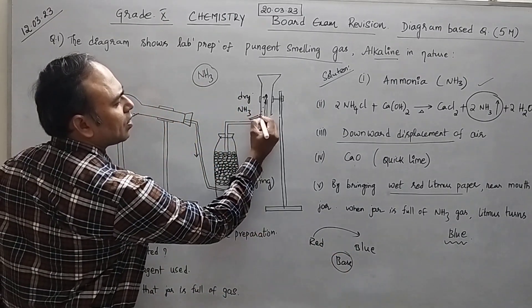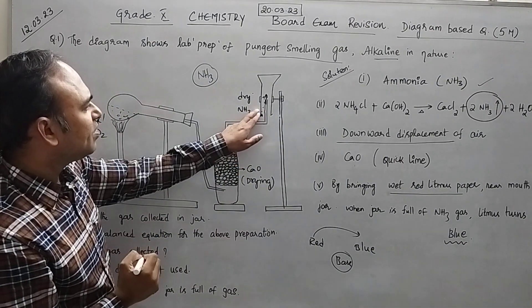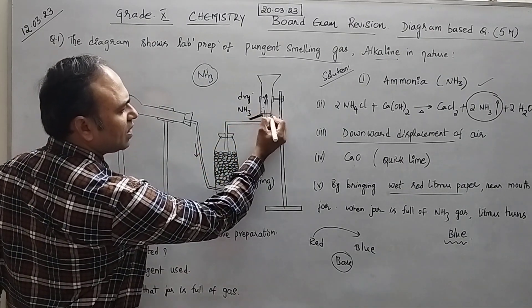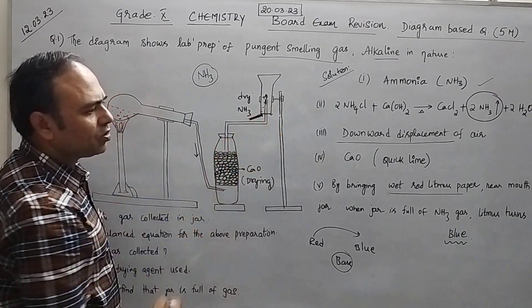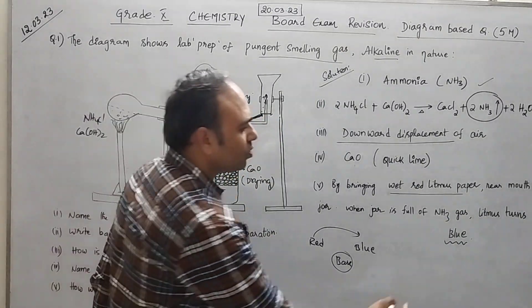Suppose you bring the red litmus up to this. Now what will happen? If the jar is full of ammonia gas, ammonia will come up to this and if it touches this due to the alkaline or basic nature what will happen? It will convert into blue.